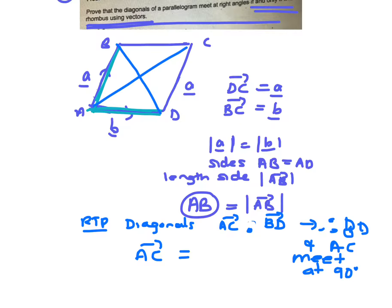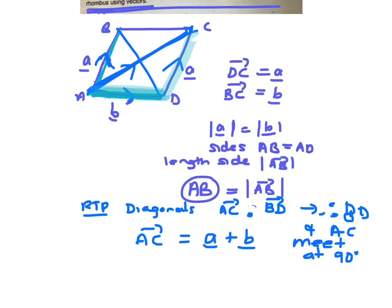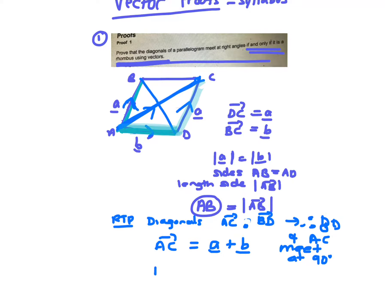AC: using the tracing method, going tail to head, that gives us a plus b. For BD, using the tracing method, it ends up being minus a plus b, so BD equals b minus a.